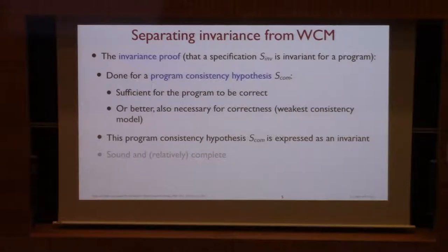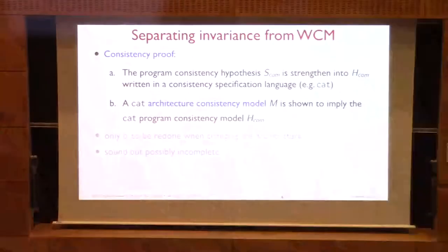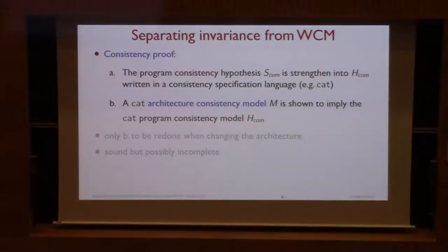So the invariance proof is separated from the weak memory model aspect, except that we have to make some hypotheses on the program behavior on the weak memory model used by the program to be correct. So I call it S_com. This one is the invariant you want to prove. And S_com is a hypothesis specific for the program, not for a machine. So it is sufficient for the program to be correct, and sometimes it's also necessary. And this hypothesis is expressed as an invariant, whereas weak consistency models in general are expressed in another language. Here we use CAT.